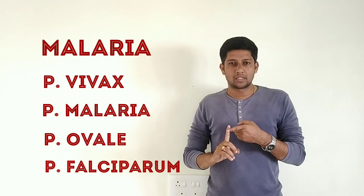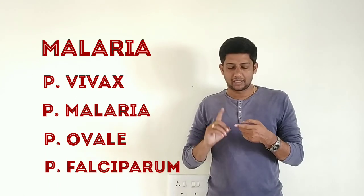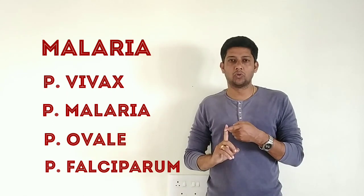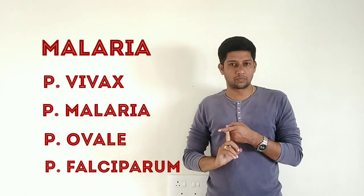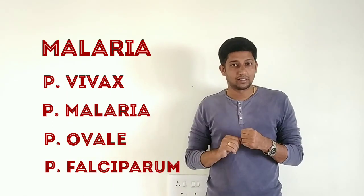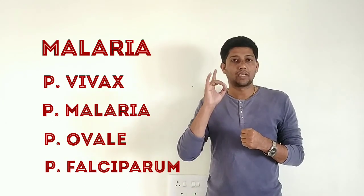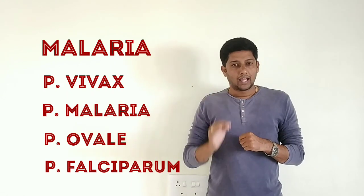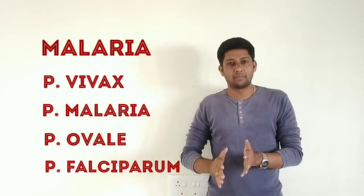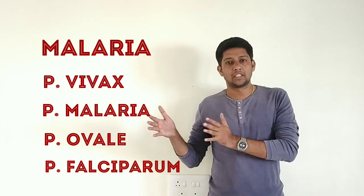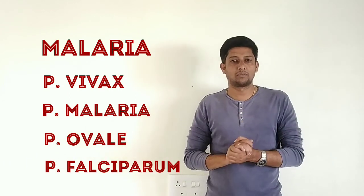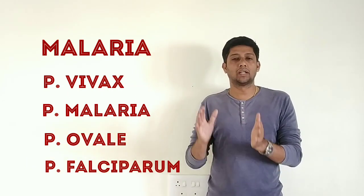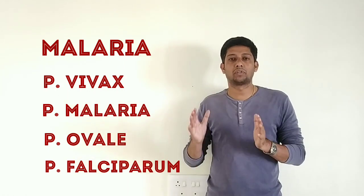To summarize: the protozoan Plasmodium is responsible for causing malaria. There are four species — Plasmodium falciparum, Plasmodium ovale, Plasmodium vivax, and Plasmodium malariae. Among them, Plasmodium falciparum is the most fatal and lethal. The female Anopheles mosquito is responsible for transmitting this protozoan because females feed on human blood, while male Anopheles mosquitoes feed on plants.